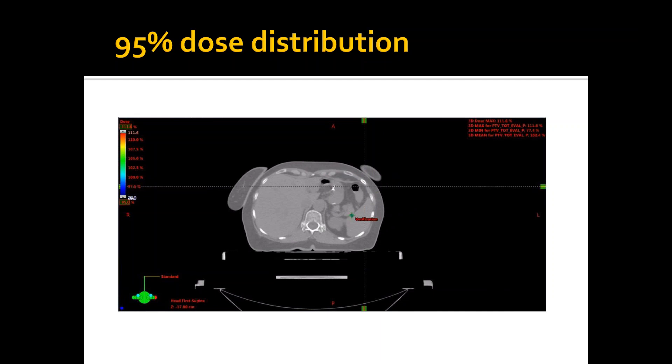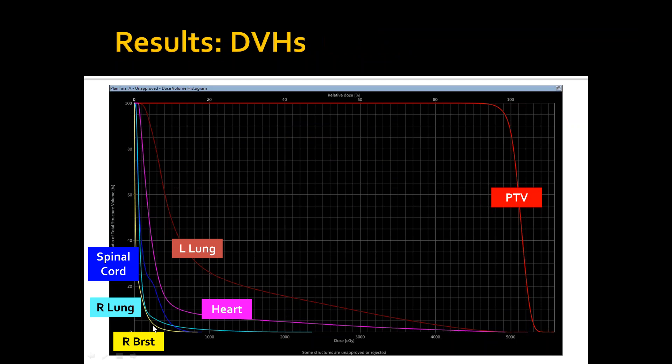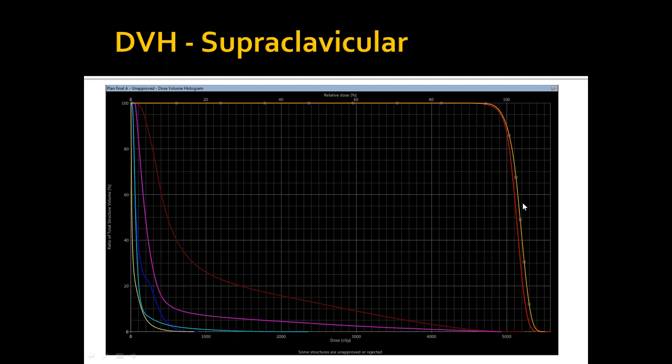This is my DVHs. This is the PTV, left lung, heart, spinal cord, right lung, and right breast. I mentioned earlier that I found some organs at risk easily achieved. This is like the heart for this example, while others like the right breast, it was very difficult for me to achieve good scores there. And just for comparison, this is the supraclav, how it compares with the total target, and this is the left breast, and this is the axilla.